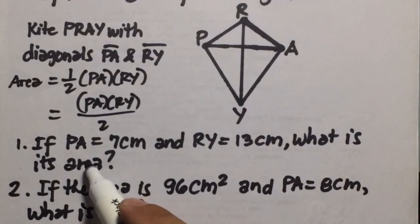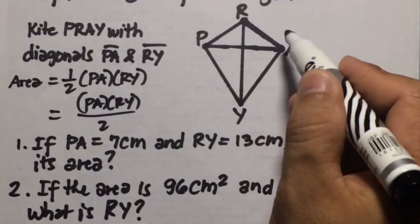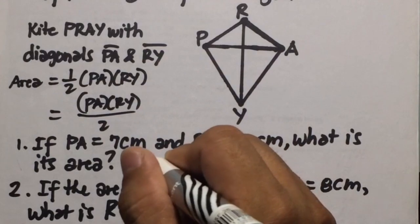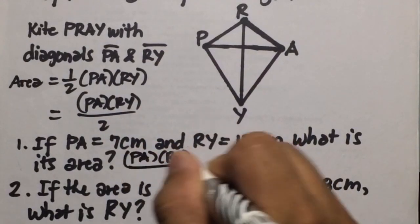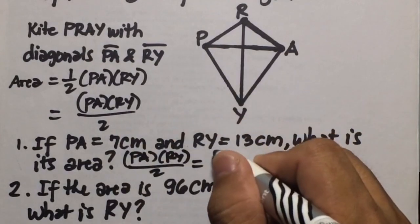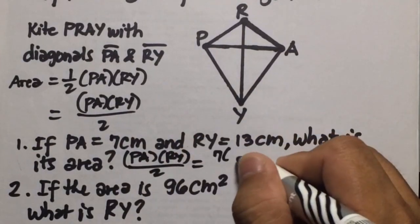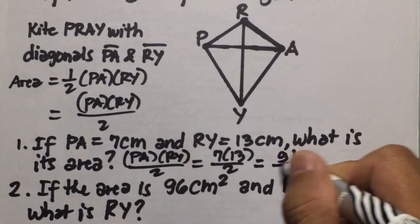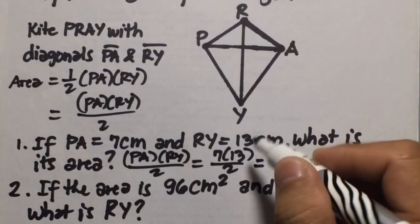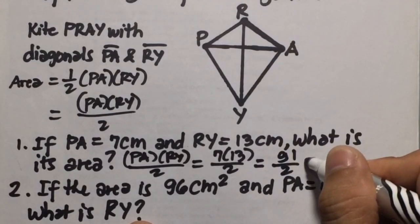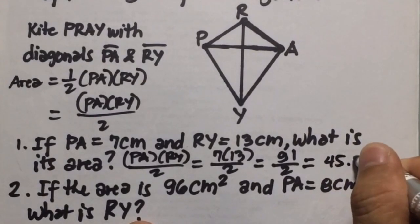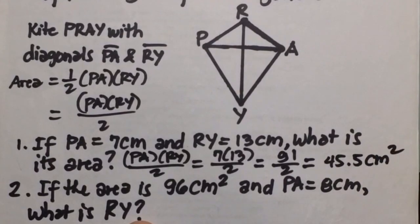Number one: if PA equals 7 and RY equals 13, what is the area? Using the formula, area equals PA times RY divided by 2, which is 7 times 13 divided by 2. 7 times 13 equals 91, divided by 2 equals 45.5 cm squared. So the area of the kite is 45.5 cm squared.